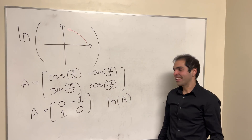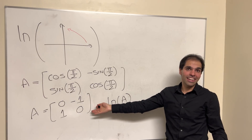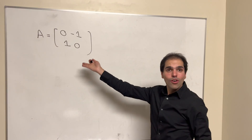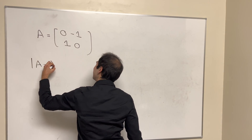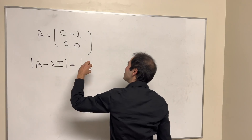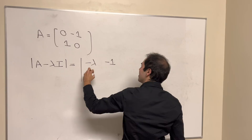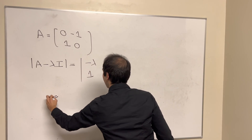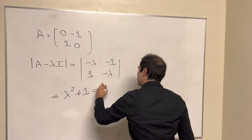And how can we do that? Well, just by finding the eigenvalues and eigenvectors. For eigenvalues, it's just the determinant of A minus λI, so this becomes [-λ, -1; 1, -λ], which then becomes λ² + 1 = 0.